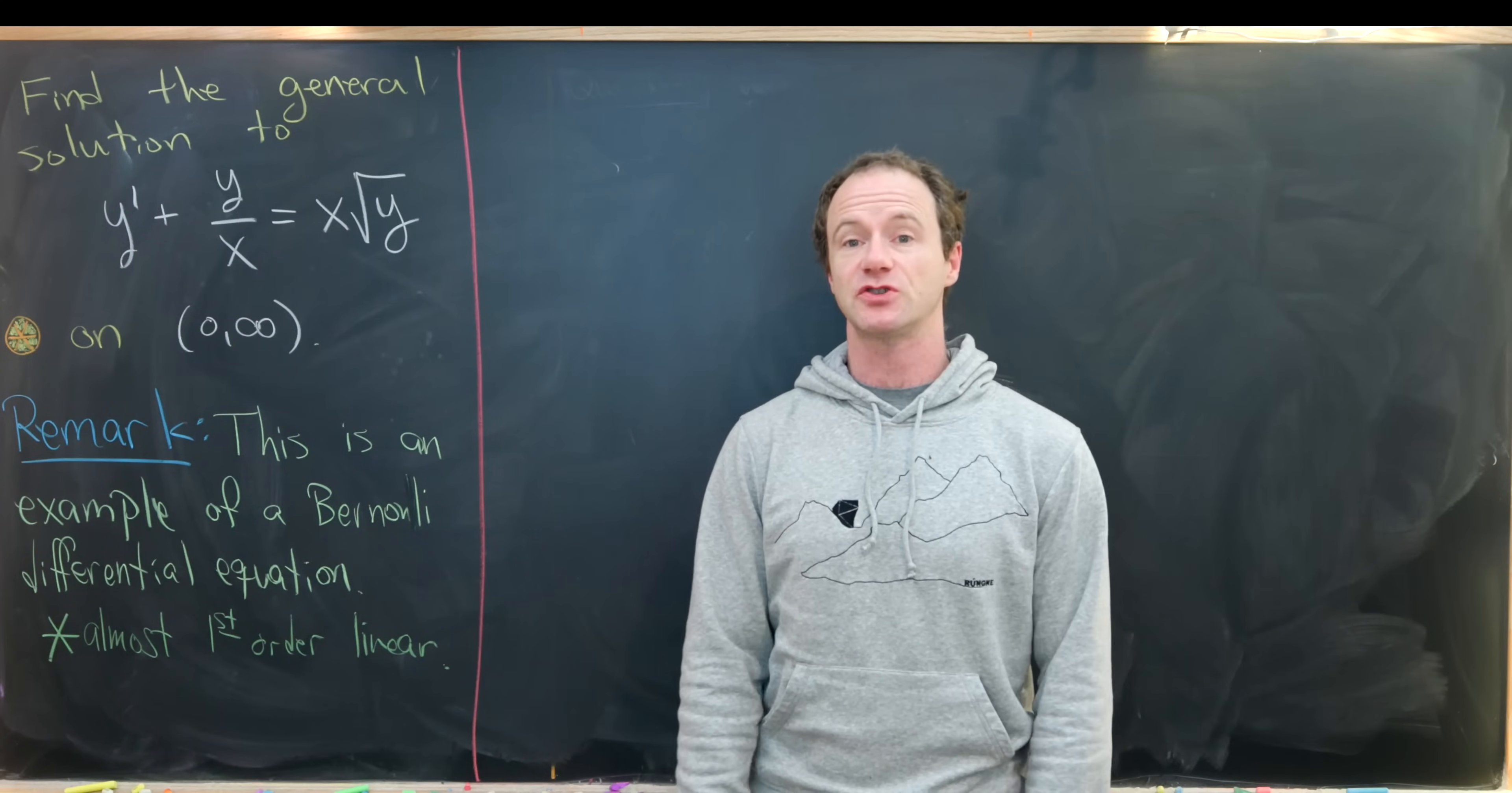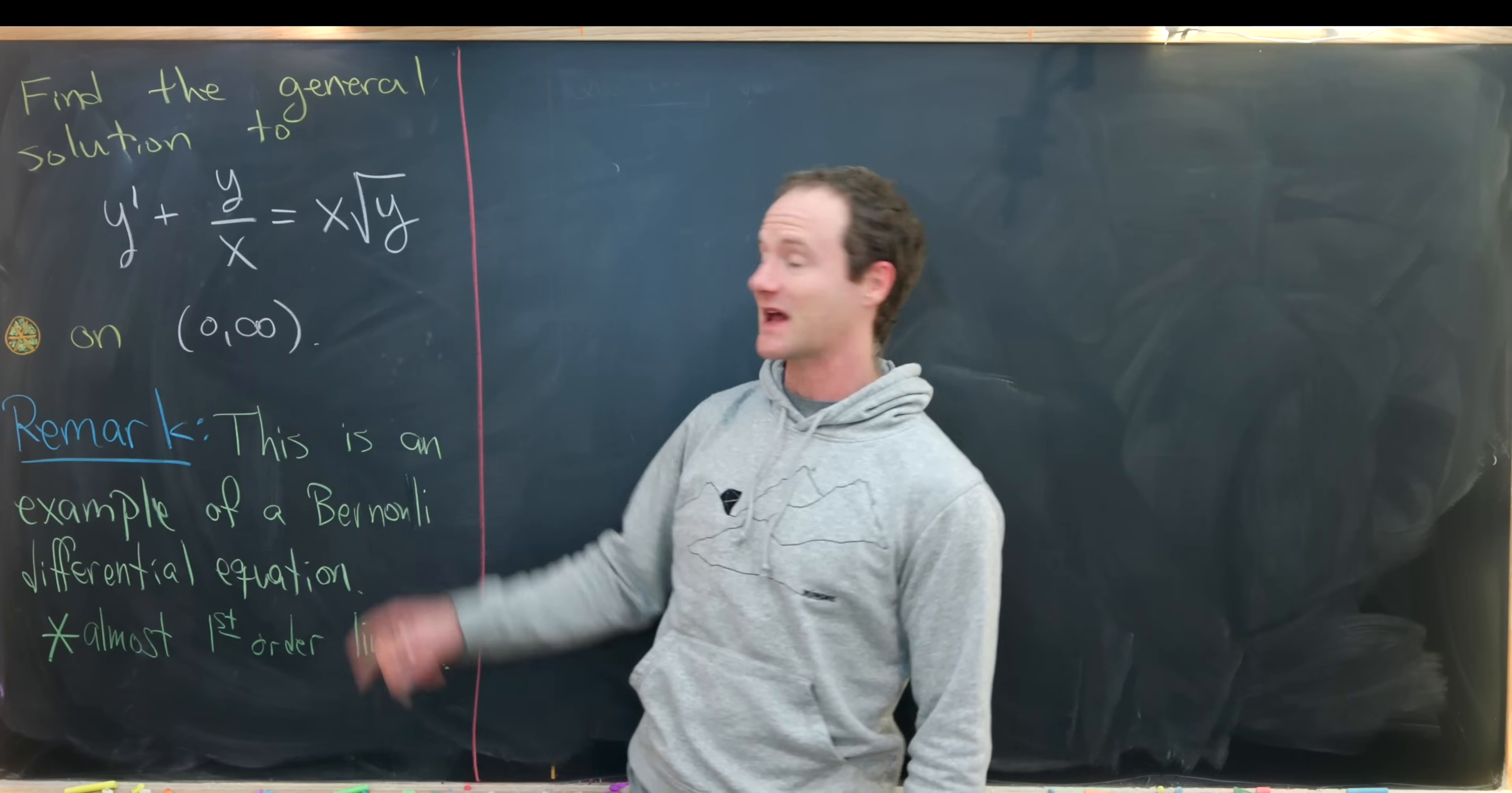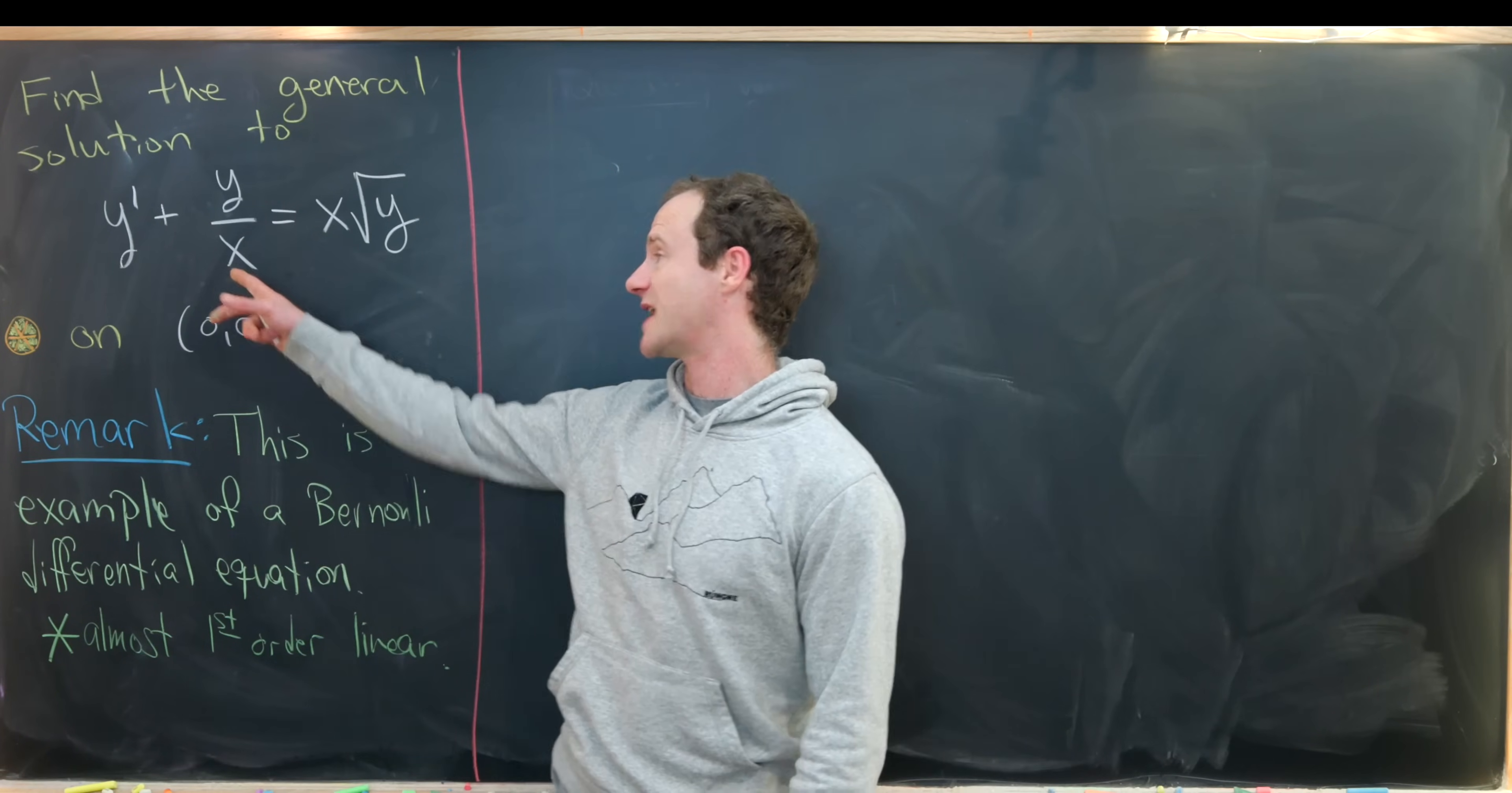Here I've got a nice differential equation to show everyone. Our goal is to find the general solution to the differential equation y prime plus y over x equals x times the square root of y. This general solution will occur on the interval zero to infinity.